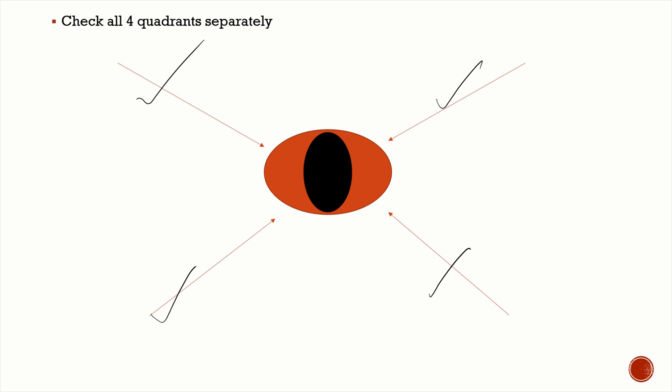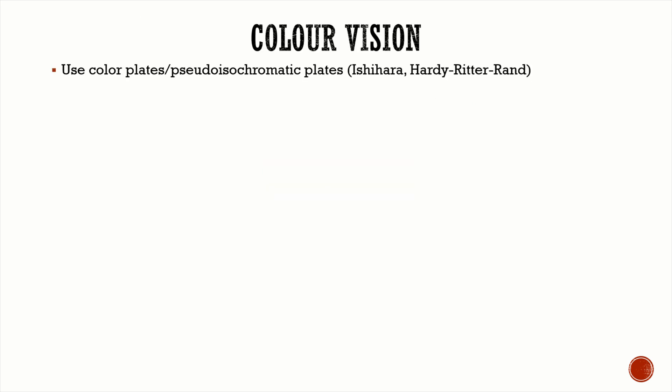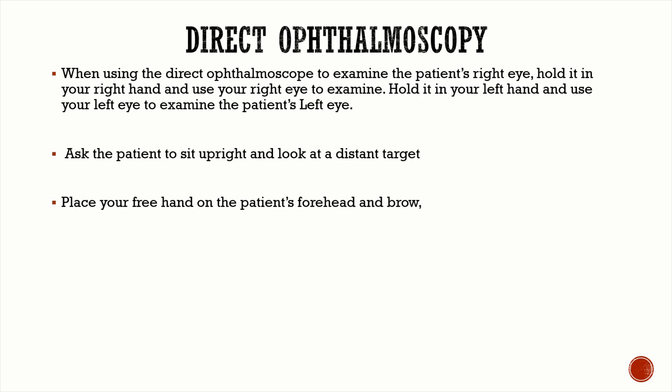For color vision, use color plates or pseudoisochromatic plates. The most commonly used is the Ishihara chart. Another one worth knowing by name is the Hardy-Rand-Rittler (HRR) chart.